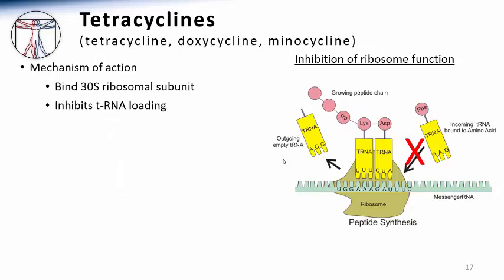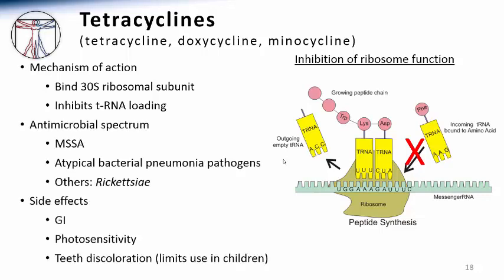Tetracyclines are a distinct class of antibiotics that share ribosome binding and protein synthesis inhibition as their mechanism of antibacterial action. In contrast to the macrolides, tetracyclines bind the 30S ribosomal subunit. At this site, they block the incoming transfer RNA or tRNA docking required for peptide elongation. Some specific names of drugs in this class include tetracycline, doxycycline, and minocycline. Like the macrolides, tetracyclines are also able to inhibit the growth of many common respiratory pathogens such as the atypical bacteria and methicillin-sensitive Staph aureus.